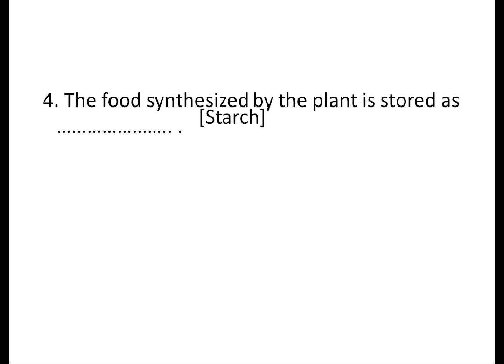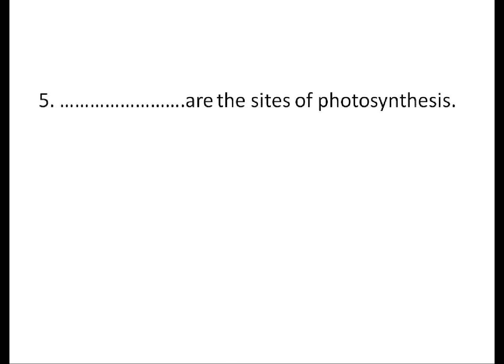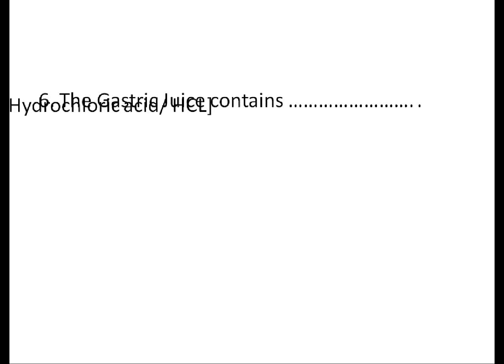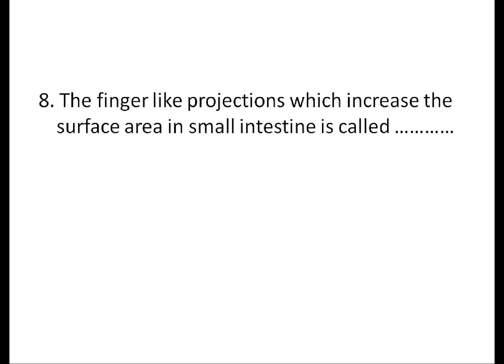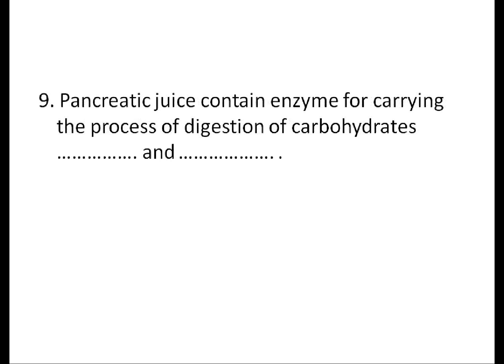The food synthesized by the plant is stored as starch. What are the sites of photosynthesis? Chloroplasts. The gastric juice contains hydrochloric acid. Which vitamin is synthesized by bacteria present in the intestine? Cyanocobalamin, or B12. The finger-like projections which increase surface area in the small intestine are called villi. Pancreatic juice contains enzymes for digestion of carbohydrates, proteins, and lipids.